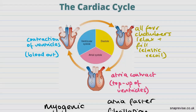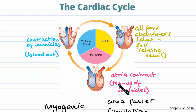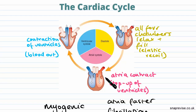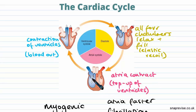The cardiac cycle can be pretty much summarised using this diagram. Starting with atrial systole, this is the stage where the atria in the heart contract and this basically tops up the ventricles, which are already filled with blood.